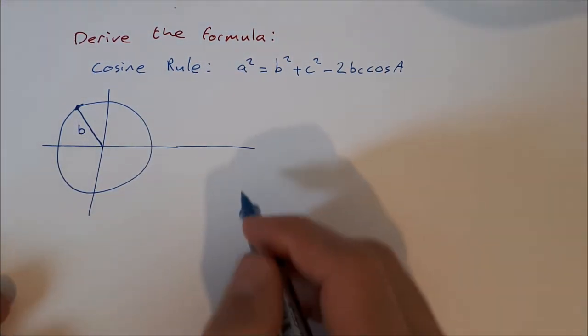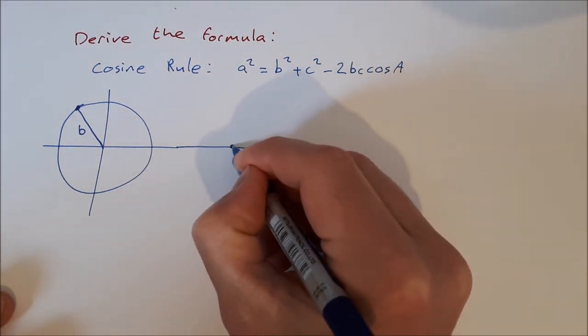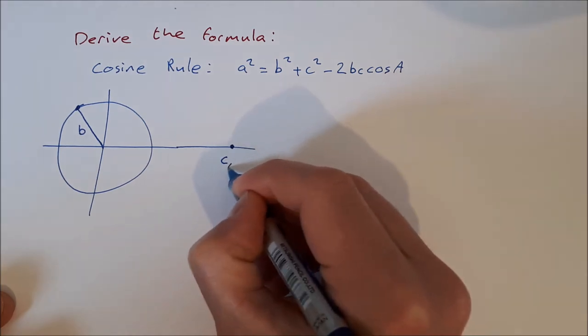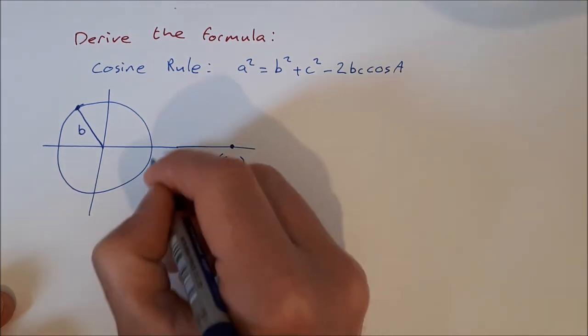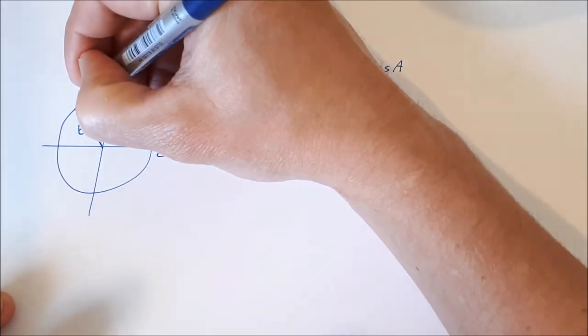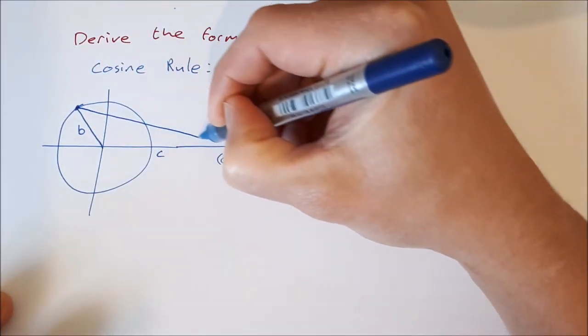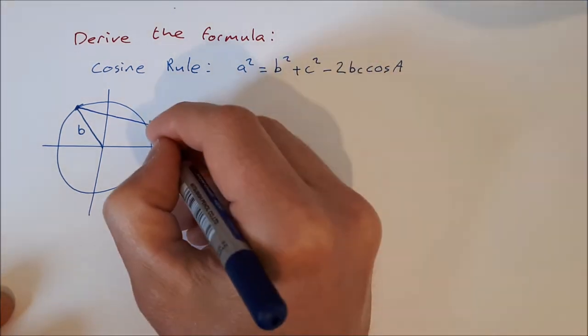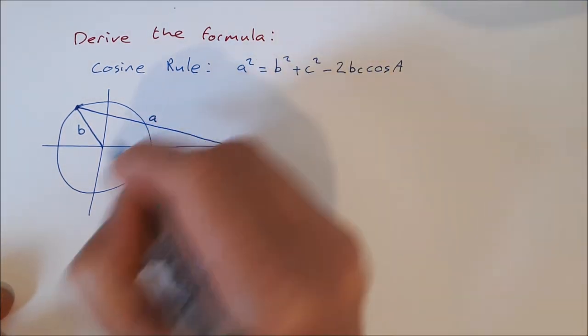We're also going to draw a point here. We're going to give it coordinates c, 0, so that means this length here is c, and then we're going to join these two points that we've just made with a new length that we're going to call a.